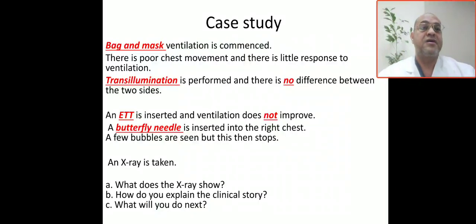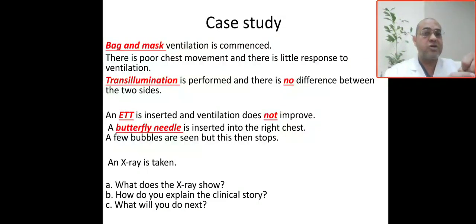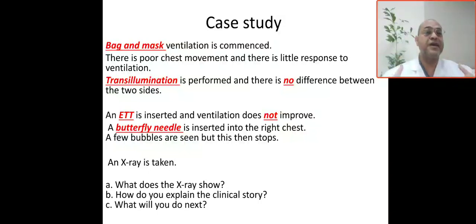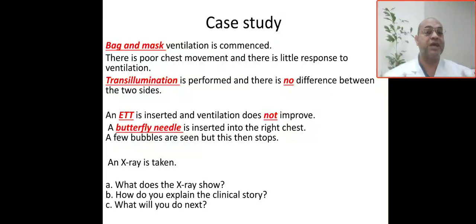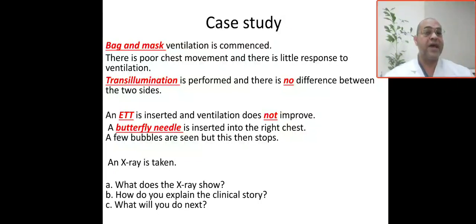The baby is gasping, so positive pressure ventilation was given. There is poor chest movement and decreased air entry or breath sounds bilaterally. There is little response to ventilation, so transillumination was done.